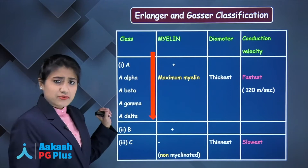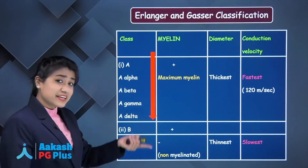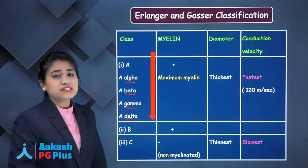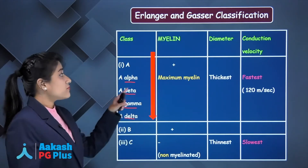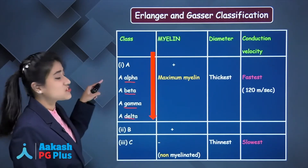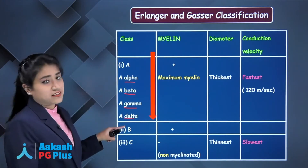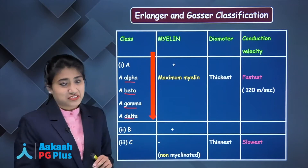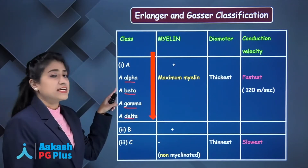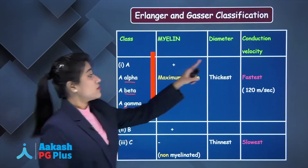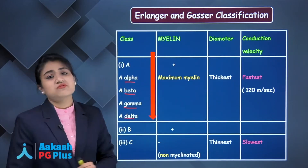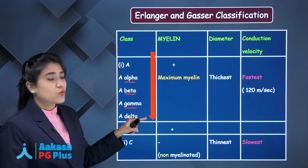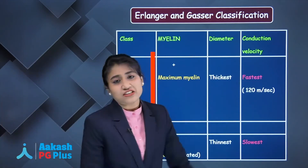A fibers are further divided into A-alpha, A-beta, A-gamma, and A-delta. From A-alpha to A-delta, myelination, diameter, and conduction velocity are all decreasing. So A-alpha has the maximum myelin, thickest diameter, and fastest conduction velocity.